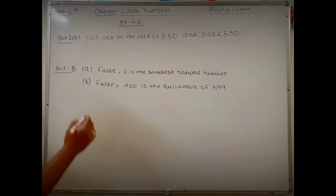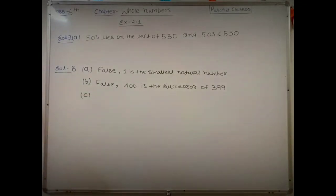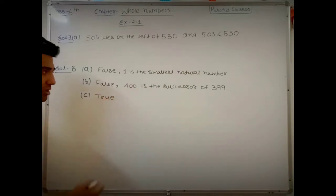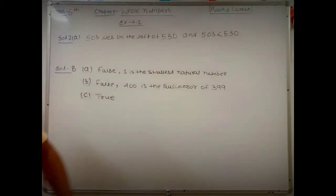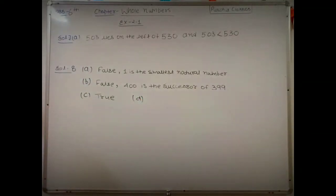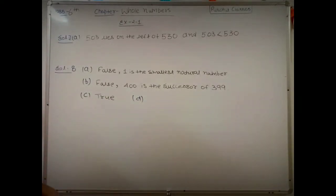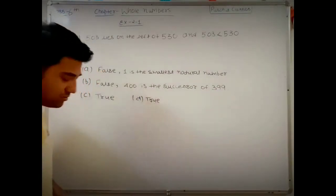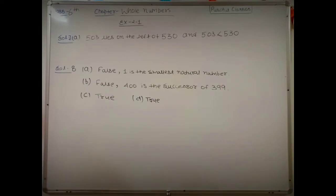Part c says: 0 is the smallest whole number. This is correct, so the answer is true. No correction needed. Part d says: 600 is the successor of 599. Since 600 lies to the right of 599, this is also true. Part e says: all natural numbers are whole numbers. This is also true.